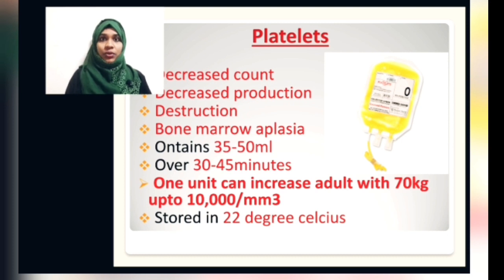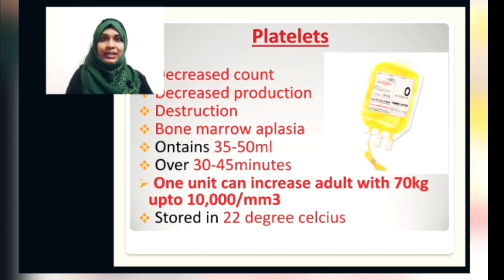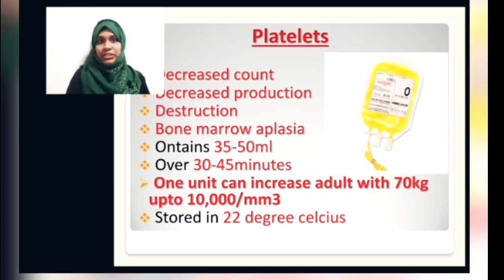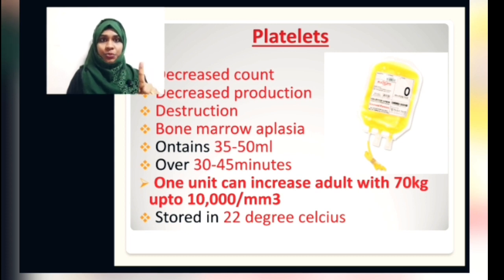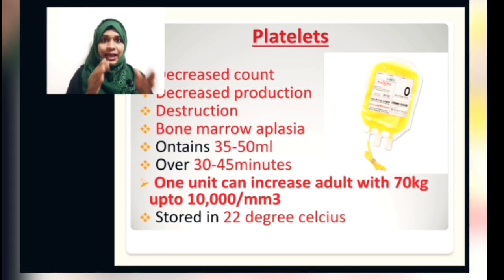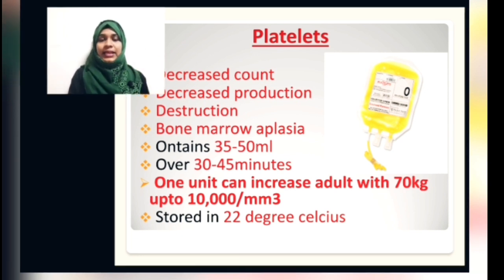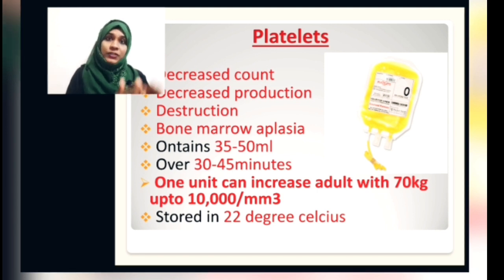Platelets are most commonly given in cases of decreased platelet count due to decreased production or increased destruction, such as when bone marrow is damaged or diseased. They are most commonly given to patients who are bleeding. Each bag contains around 35 to 50 ml and should be transfused over 30 to 45 minutes. One unit increases platelet count in a 70 kg adult by approximately 10,000 per mm³. Platelets should be stored at 22 degree Celsius, and the shelf life is two to five days, up to seven days.